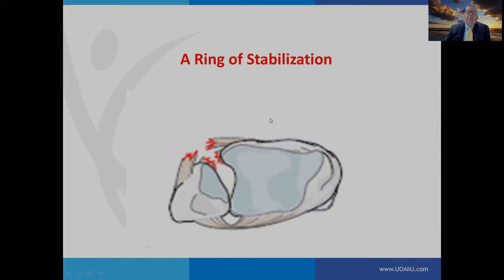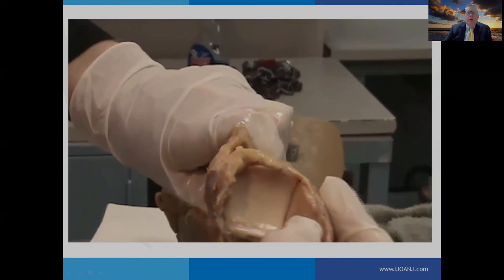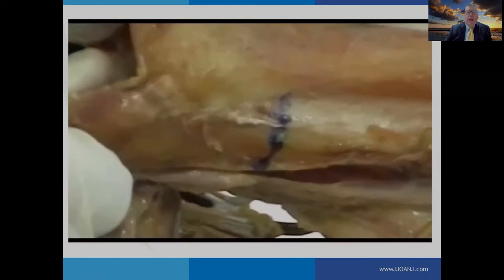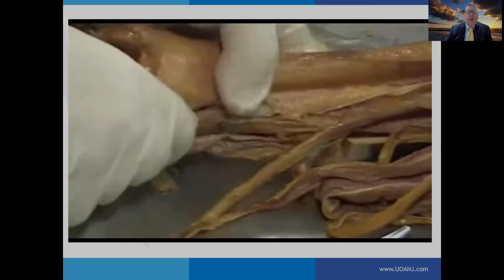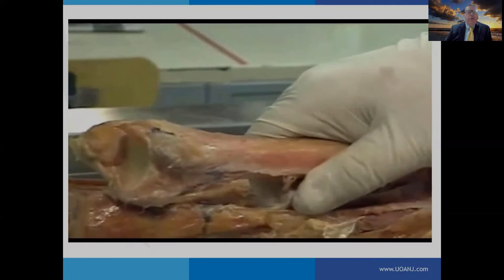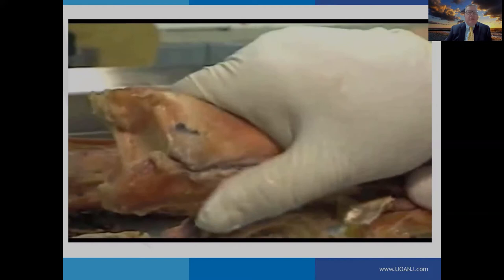Disruption of any of these ligaments will impact stabilization of the syndesmotic joint. The syndesmosis is a pretty stable joint — even with resection of the anterior, posterior, and interosseous membrane, it remains stable, meaning the interosseous ligament plays a key role. Also note that there is bony stability between these two bones provided by the anterior and posterior tubercles of the tibia.